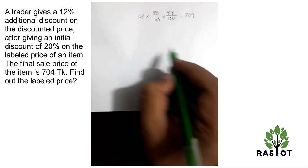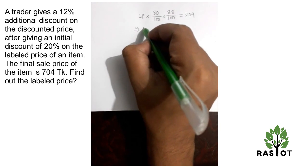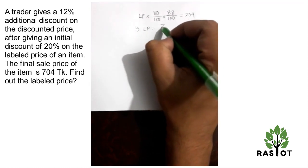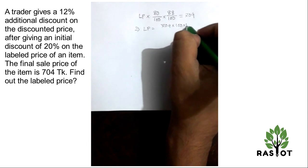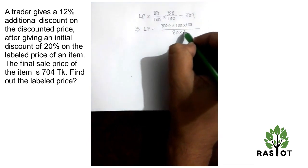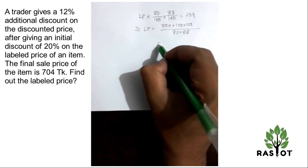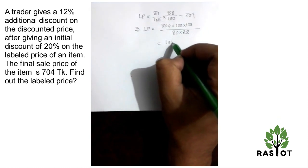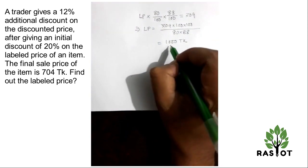Okay, so to calculate the labeled price, take 704 times 100 times 100 divided by 80 times 88. The solution is 1000.